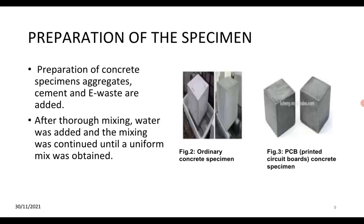For preparation of the concrete specimen, the materials include aggregate, cement, and e-waste. After thoroughly mixing these ingredients, water was added and mixing was continued until a well-formed mix was obtained. The first image shows an ordinary concrete specimen, while the second shows a PCB concrete specimen.